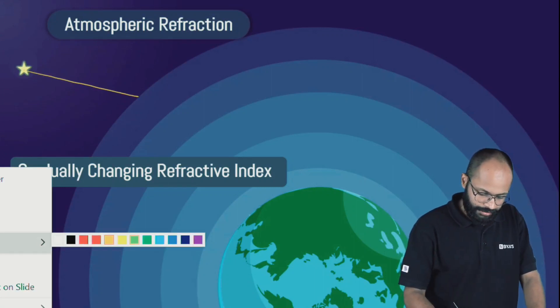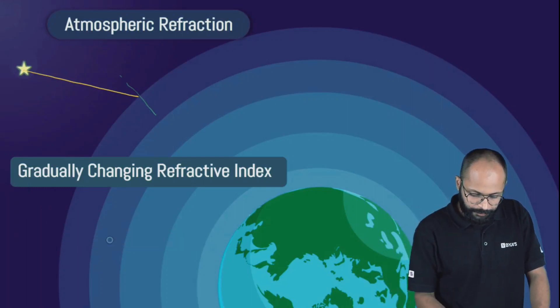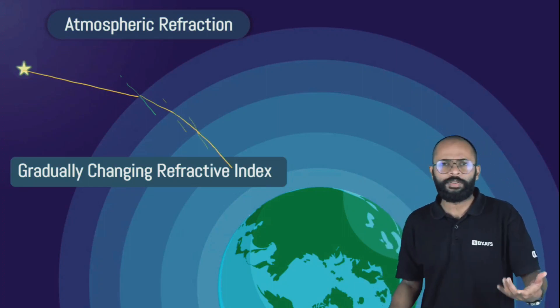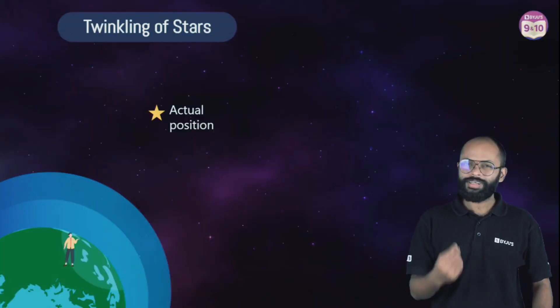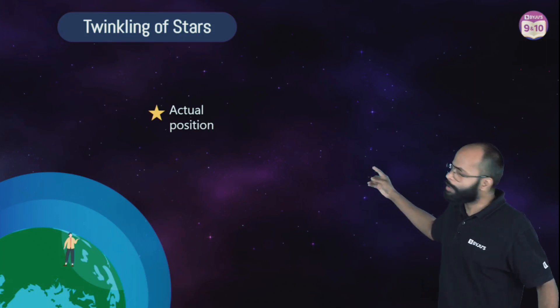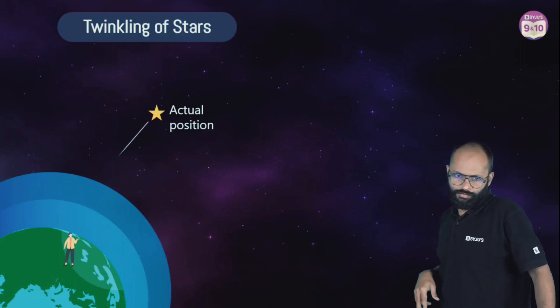If light is traveling in this manner and this here is the normal, the light ray is going to bend towards the normal. Then we have another normal, towards the normal, another normal, towards the normal. This is what happens as the light from the star is reaching towards the earth. What is the consequence? The actual position of star is this.